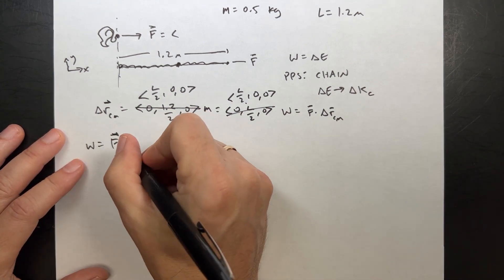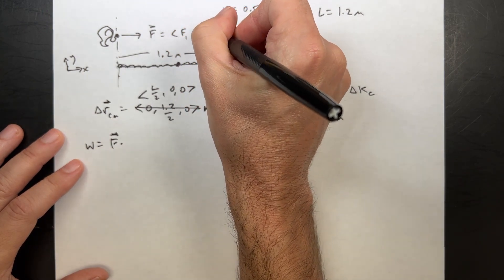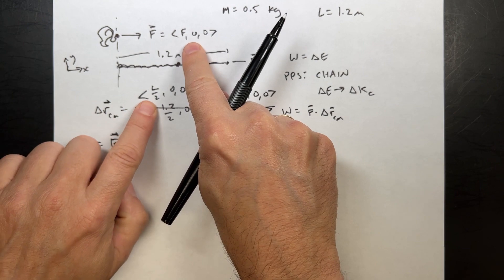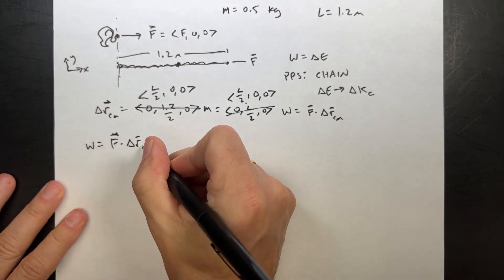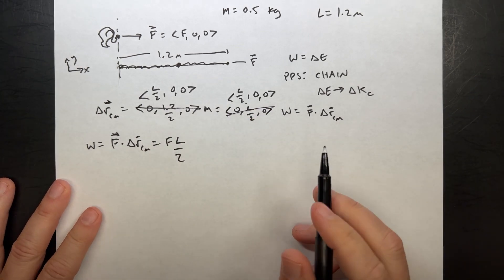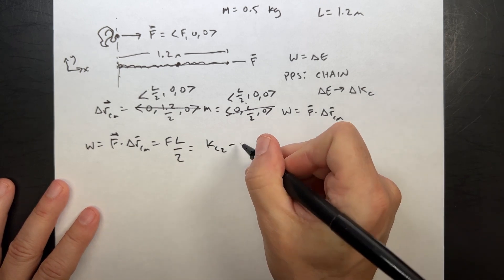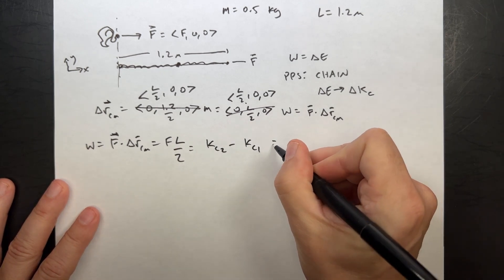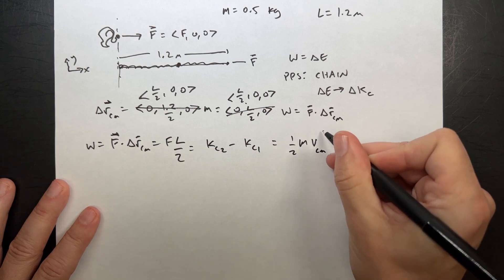So there's F. F is, let's just call this F, 0, 0. So the dot product between these two, the only things that they have are the x components. So F dot delta R center of mass is going to be F L over 2. And that's going to be equal to the change in kinetic energy, K center of mass 2 minus K center of mass 1, which is 1 half M, V center of mass squared.